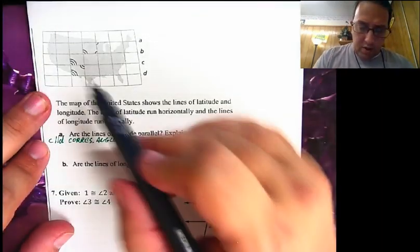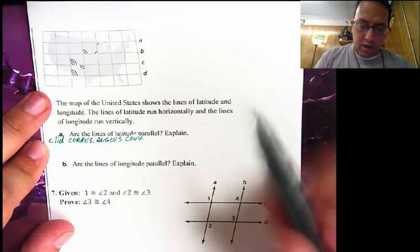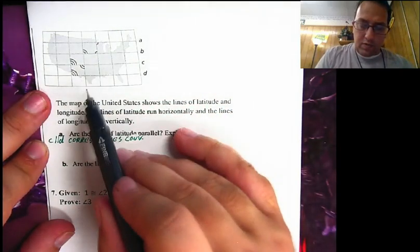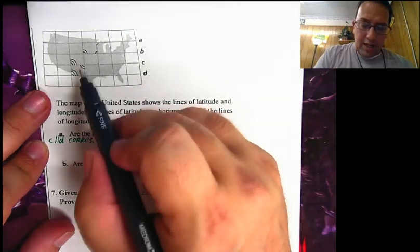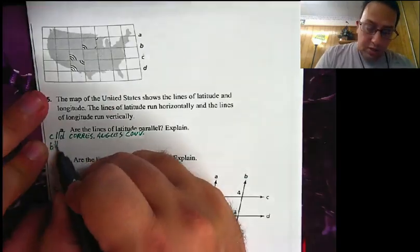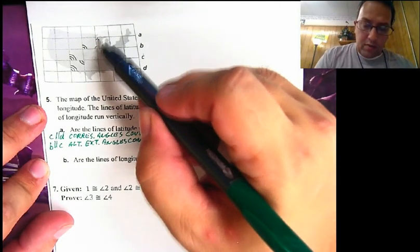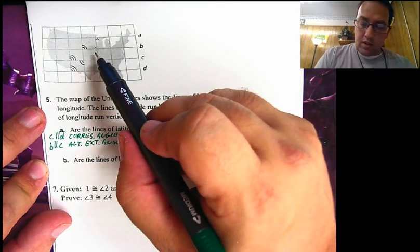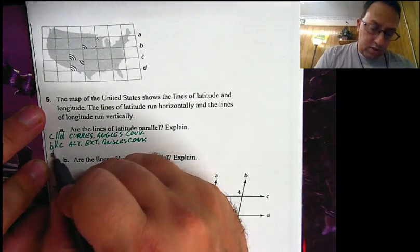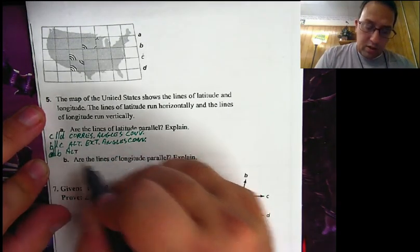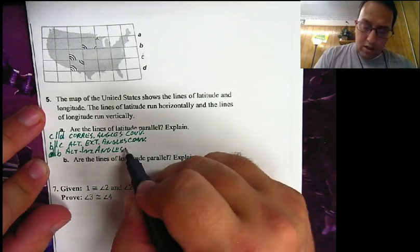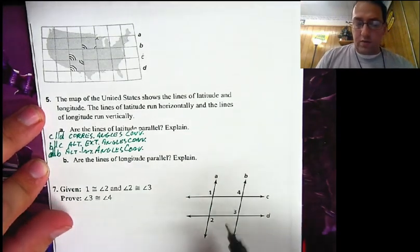Let's check the other lines. We have two angles marked with two arcs — those are congruent. Looking at lines C and B with this transversal, those are alternate exterior angles and they are congruent. So B is parallel to C by the alternate exterior angles converse. And up here, looking at lines A and B, we have alternate interior angles that are congruent. So A is parallel to B by the alternate interior angles converse.